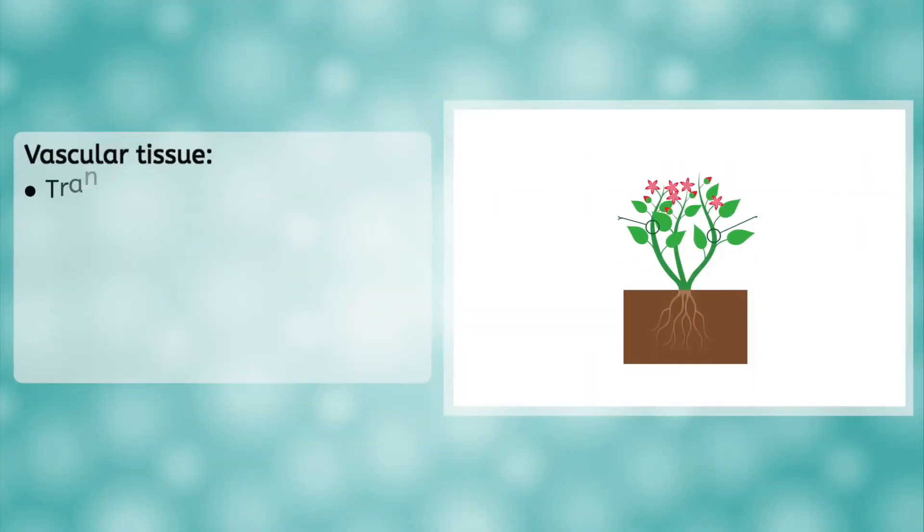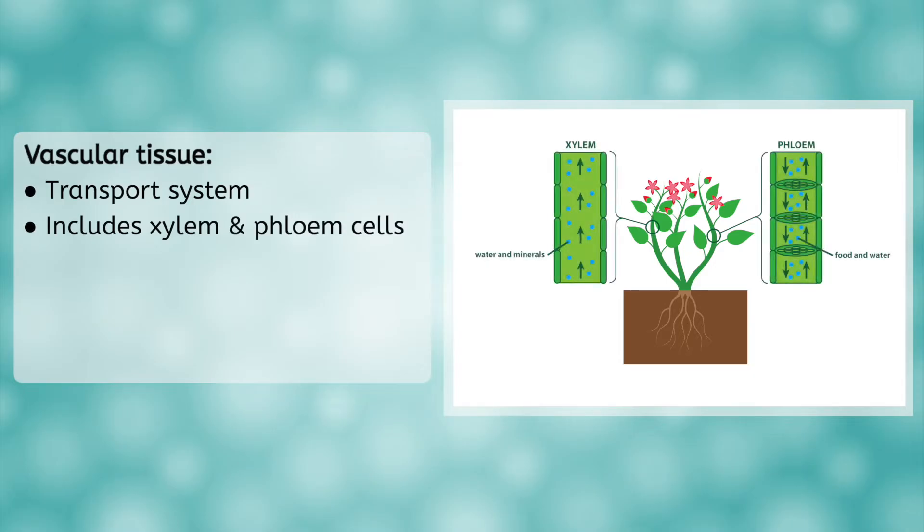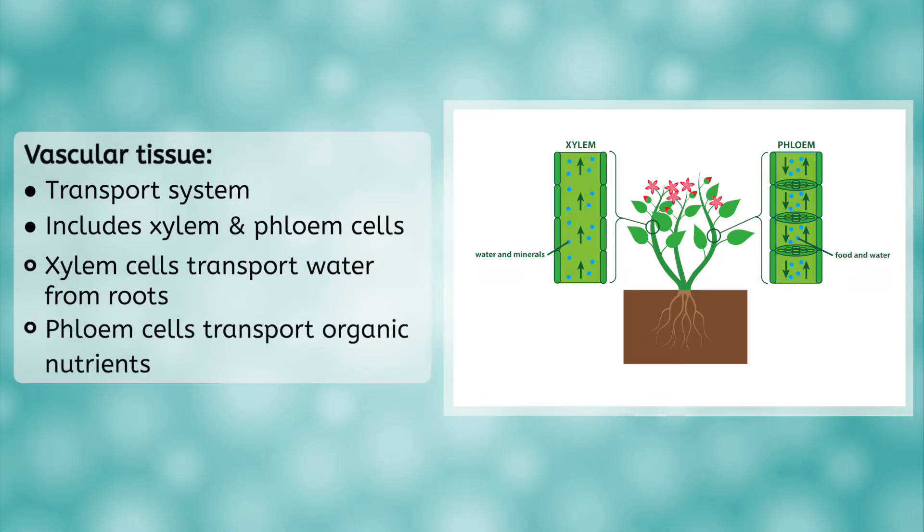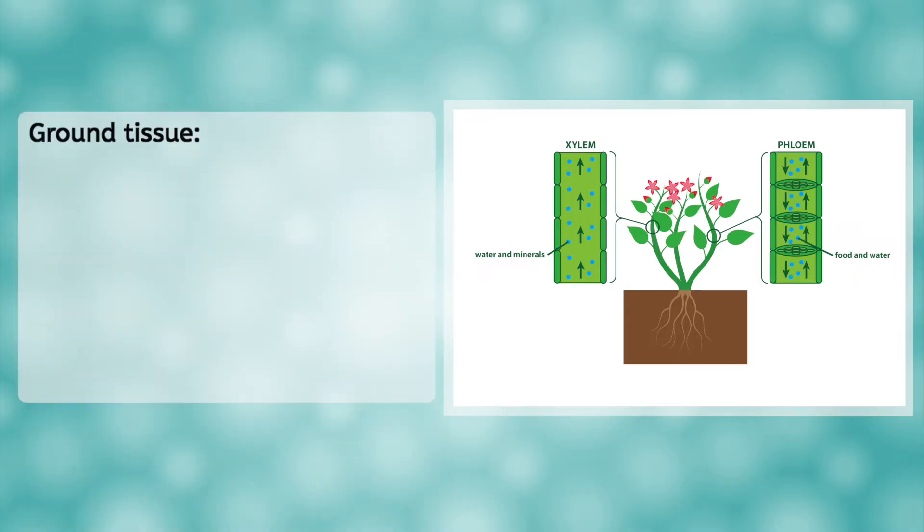Vascular tissue makes up the transport system in plants, and includes xylem cells and phloem cells. Xylem cells transport water from the roots, while phloem cells transport organic nutrients to all parts of the plant. All of the other types of tissue in a plant are classified as ground tissue.